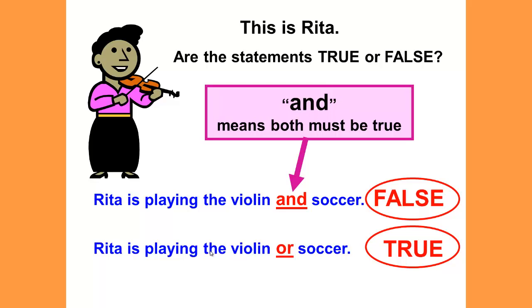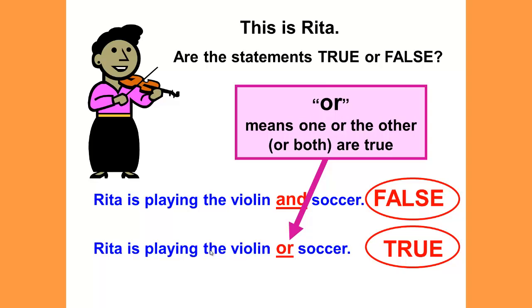And means both statements must be true. Rita must be playing the violin and soccer both. The picture does not show that, therefore this statement is false. Or means one or the other or both are true. Rita is playing the violin or soccer, and since she is playing the violin, that makes this statement true.